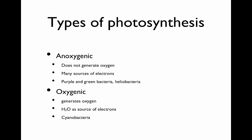There are several types of photosynthesis. Anoxygenic photosynthesis does not generate oxygen. It has many different sources of electrons, and there are a number of different groups of bacteria that do this: the purple bacteria, the green bacteria, and the heliobacteria, among others.